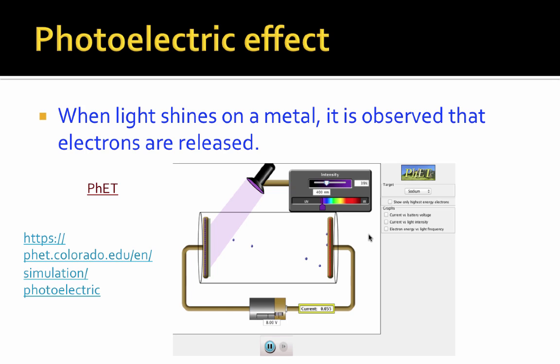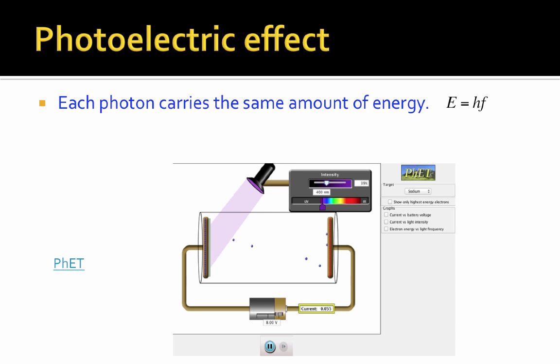Alright, so what is the photoelectric effect? It's just like the name sounds. When light shines on a metal, it's observed that electrons are released. This picture comes from a PhET, which you're welcome to play with. The link to a downloadable app is here. And the PhET shows that we've got light of different colors shining on a metal, and little electrons are released and just sort of travel across to the other side to the collector.